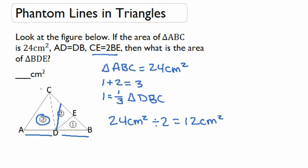Now, if we know that triangle DBC is 12 centimeters squared, and we know that triangle 1 is one-third of that, we can take our 12 centimeters squared and divide by 3.